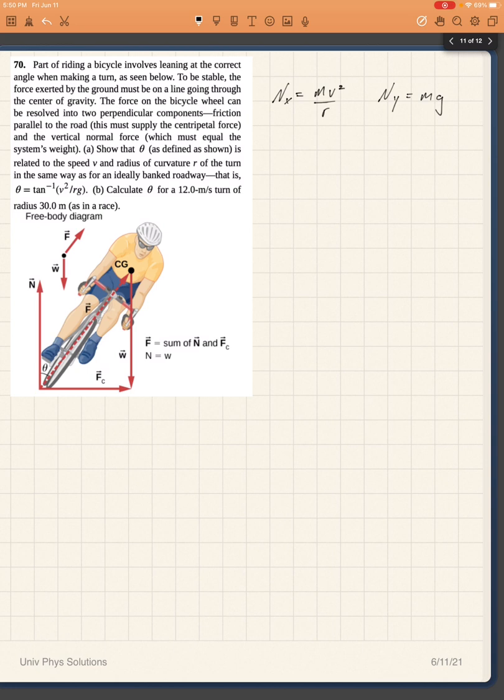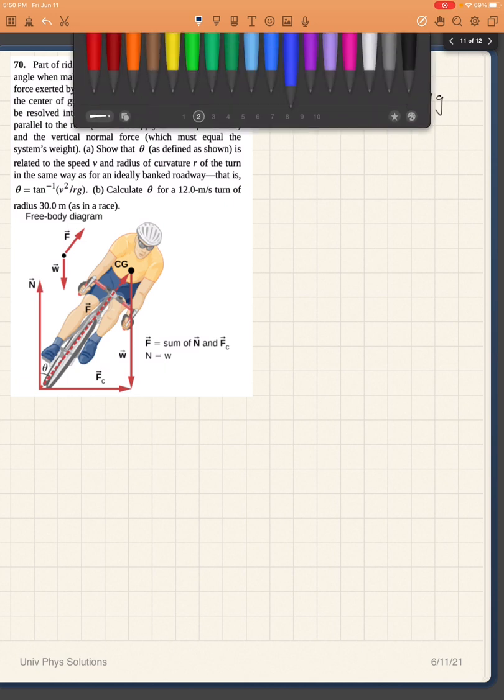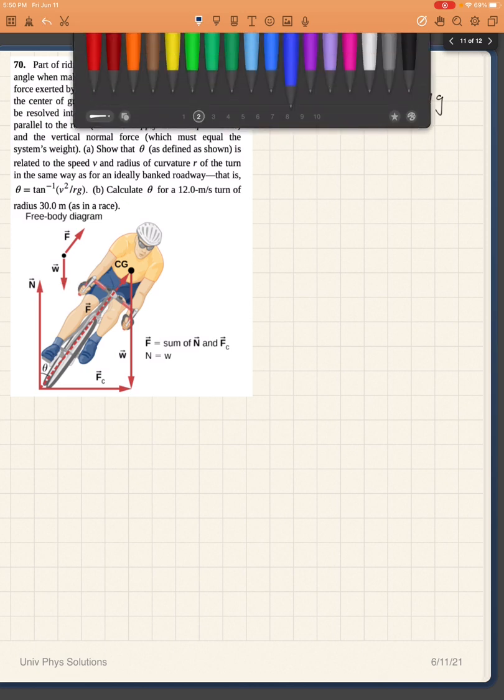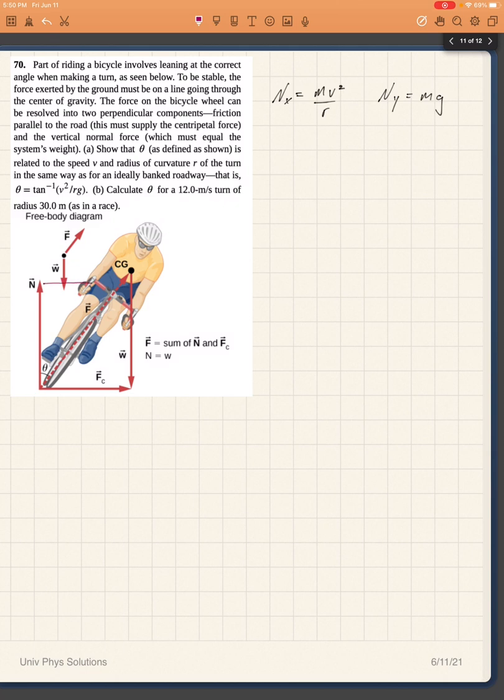Now I can find the nx and ny components because I have an angle. So nx, which would be this component, maybe blue wasn't the best choice for that, is actually going to be related to the sine of that angle. So that's going to be n sine of theta. And that's because this side of the triangle is opposite to the angle.